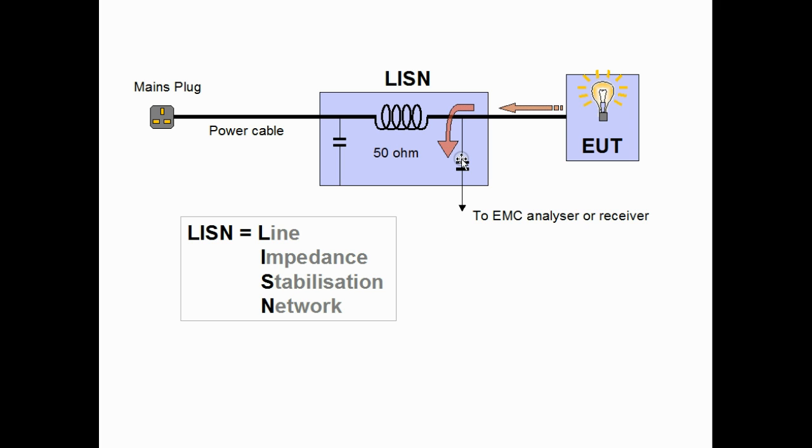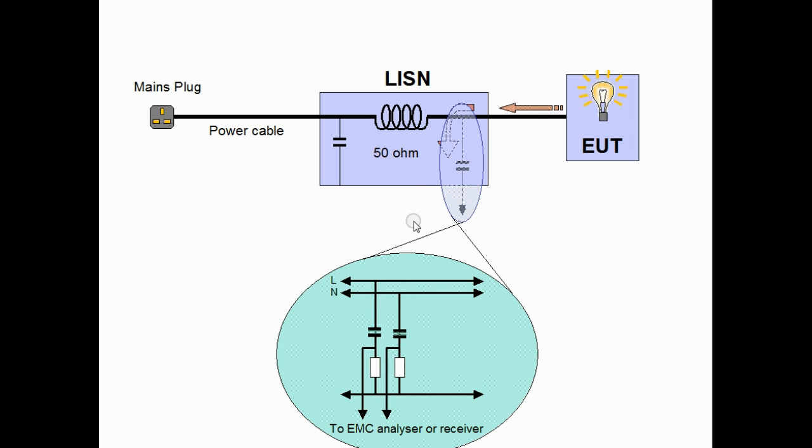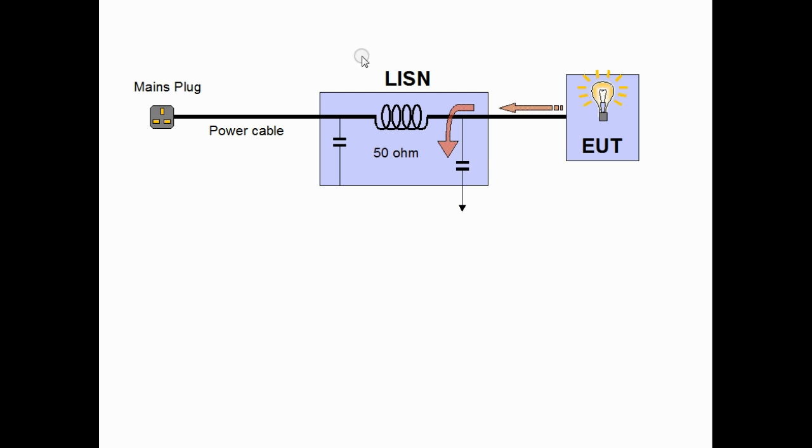If we look in more detail at how we connect to the line, we can see that we need to connect to both live and neutral on a single phase supply. These are each measured by the analyzer, each must comply with the limit set down by the standards. Similarly, in a three phase supply we have four connections and we measure each one in turn. So that's how a LISN works.